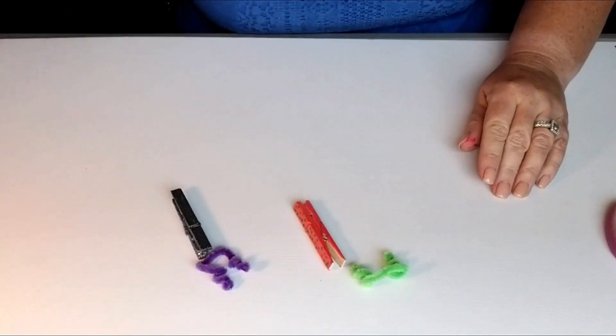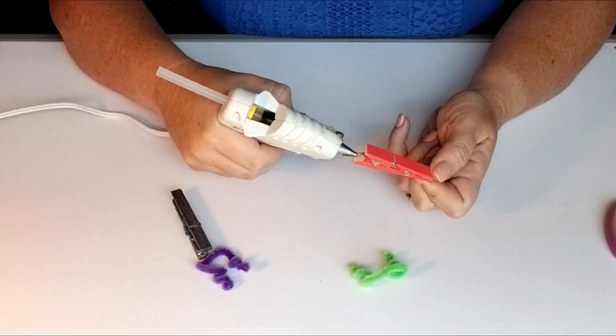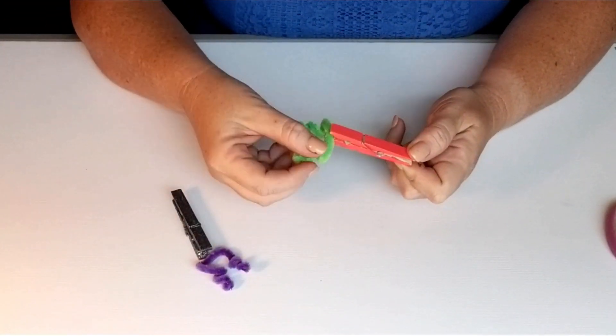Now it's time to attach our antennas. You can use regular Elmer's glue or you can use a glue gun like I'm using here.